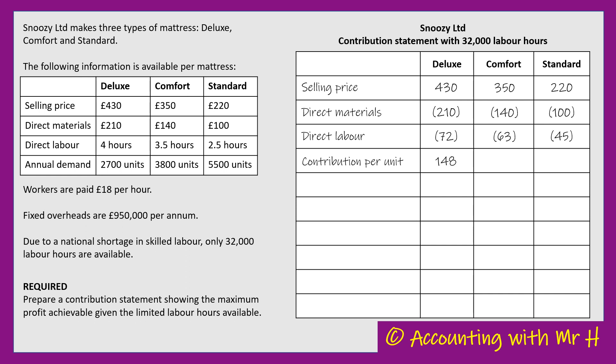The Deluxe: £430 take away £210 and take away £72 means a Deluxe generates £148 of contribution per unit. Comfort: £350 take away £140 and £63 is £147. And then the Standard: £220 take away £145 equals £75.